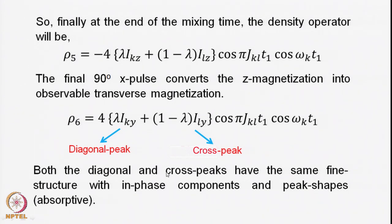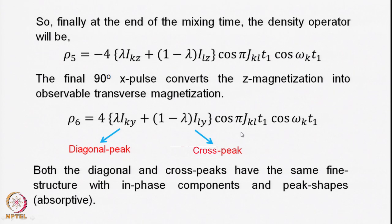Both the diagonal and cross peaks have the same fine structure — both are Y-magnetization with the same phase and the same coefficients, so they have the same shape. Along the F1 dimension, the modulation cos(ωK·T1)·cos(πJKL·T1) produces two peaks at ωK ± πJKL. Because it is a cosine modulation, these will be absorptive line shapes in the spectrum.